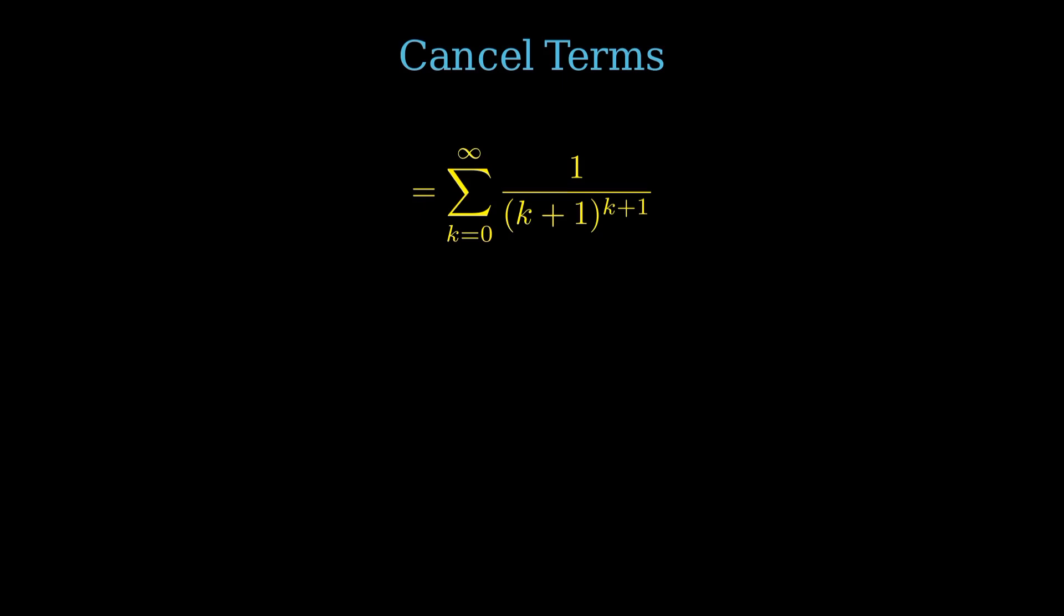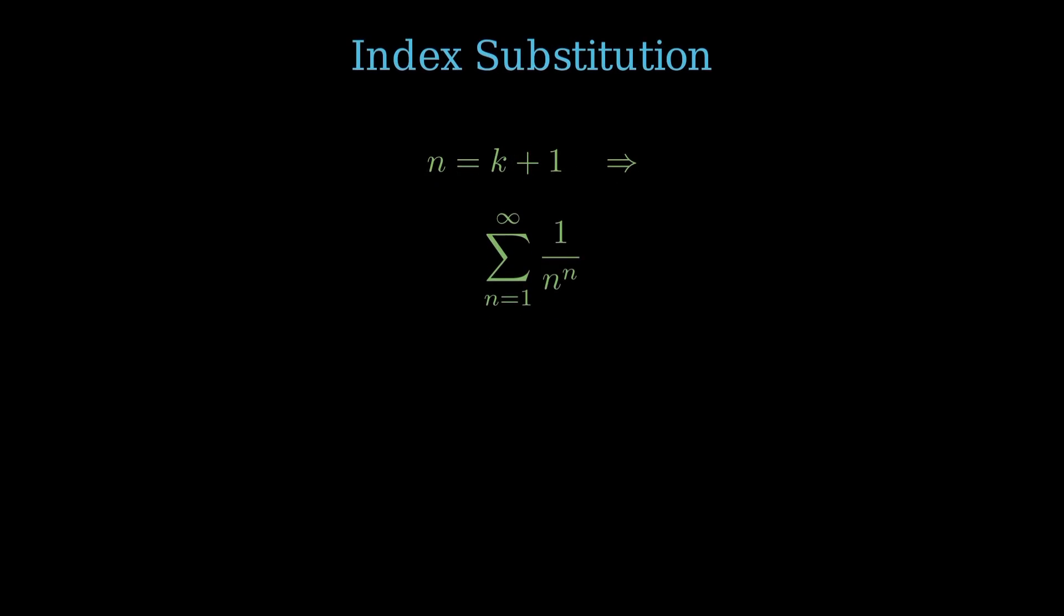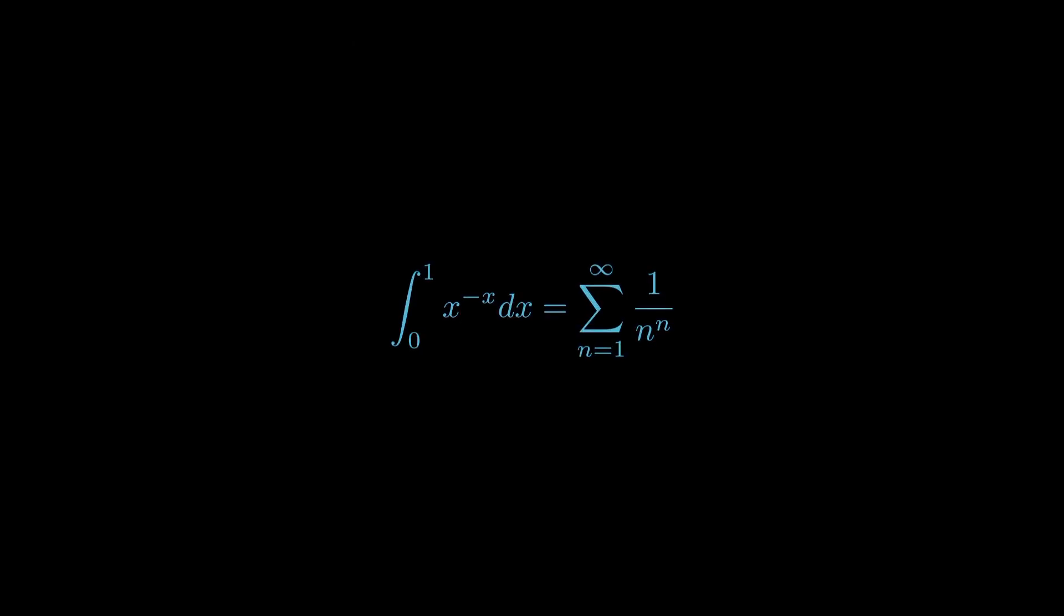To make this look neater, let n equal k plus 1. When k equals 0, n equals 1. As k approaches infinity, n approaches infinity. So our sum becomes sum from n equals 1 to infinity of 1 over n to the n. And there it is. The integral from 0 to 1 of x to the negative x dx equals the sum from n equals 1 to infinity of 1 over n to the n. The sophomore's dream is realized.